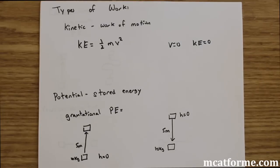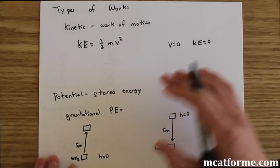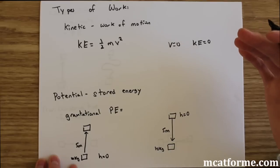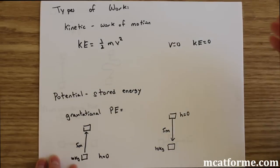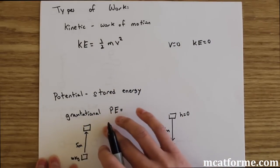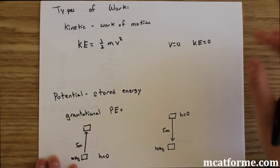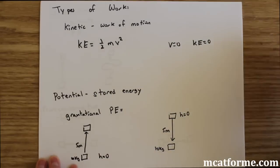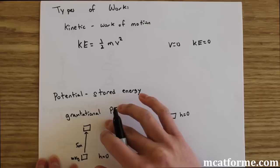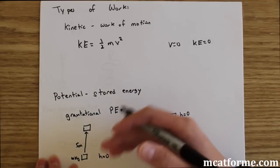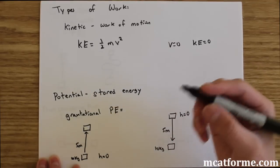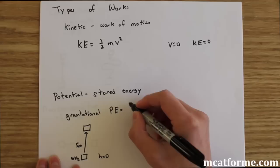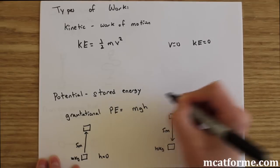Now we're looking at potential energy, which is stored energy. There are two types: gravitational and elastic. In this lecture we'll focus on gravitational potential energy, which deals with changes in height. Elastic potential energy involves springs and rubber bands and will be covered in a future lecture. Gravitational potential energy equals mgh.